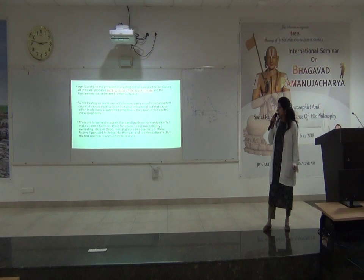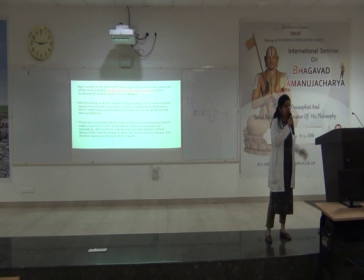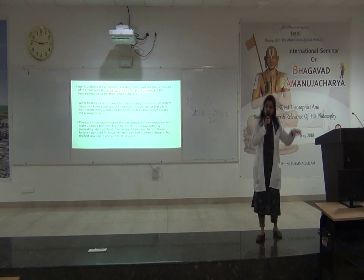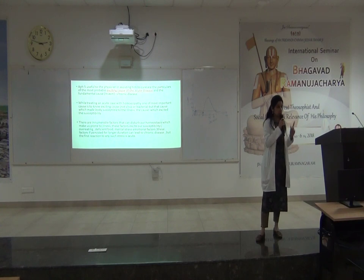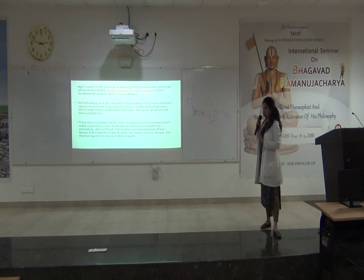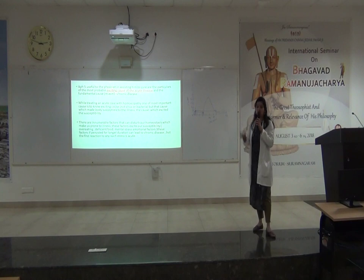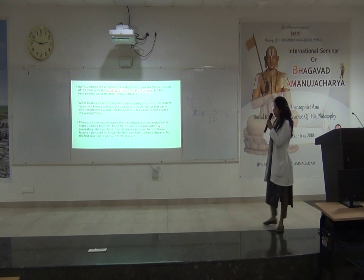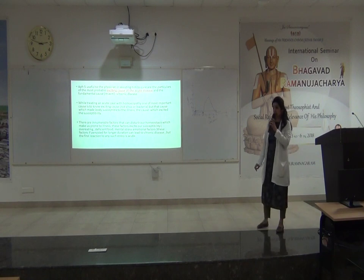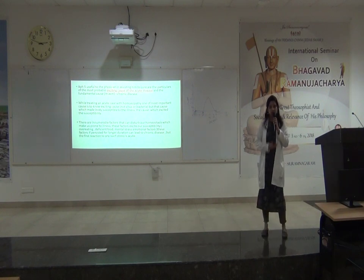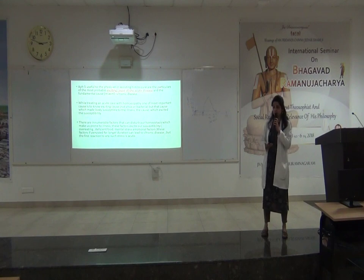We all came from June 1st, sat in OPDs, met people, and travelled — yet many did not get COVID-19. That is because either we went asymptomatic due to our susceptibility, or we were not prone to it. There are innumerable factors which disturb our homeostasis, make us prone to illness, and excite our susceptibility. This is not a process of today — it is a process from genetics, something acquired, that makes us what we are today.